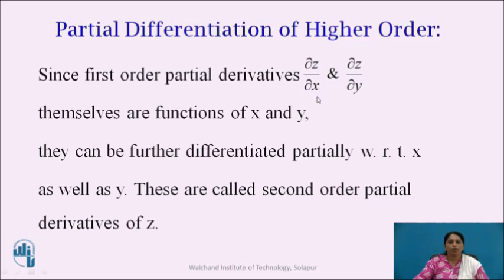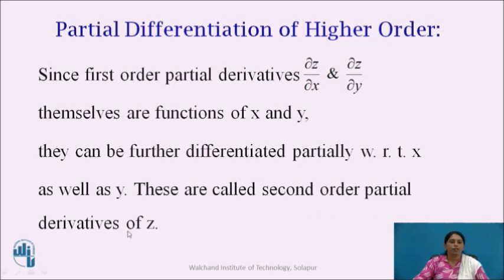∂z/∂x and ∂z/∂y themselves are functions of x and y, they can be further differentiated partially with respect to x as well as y. These are called the second order partial derivatives of z.